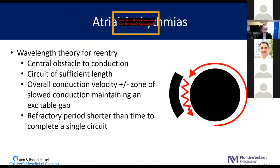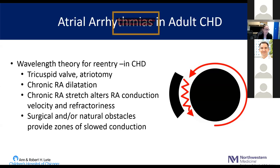You all know this diagram — it's the wavelength theory for re-entry. We know that you need a central obstacle to conduction, a circuit of sufficient length, an overall conduction velocity plus or minus the zone of slowed conduction maintaining an excitable gap, and a refractory period that's shorter than the time to complete a single circuit. In adults with congenital heart disease, there are additional factors that enable the setup of these circuits, sometimes earlier than you would otherwise see them in a structurally normal heart.